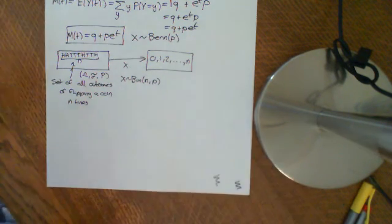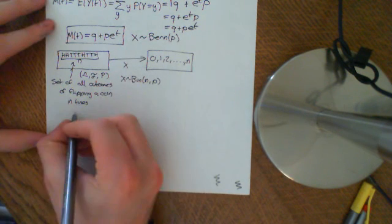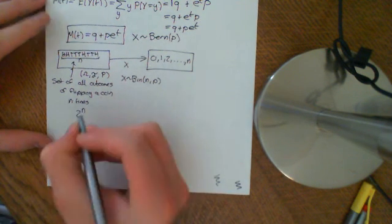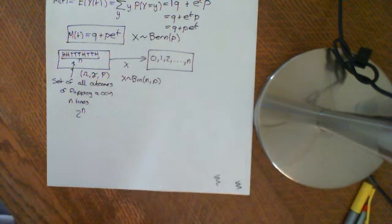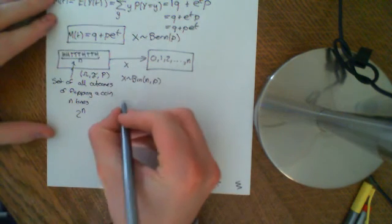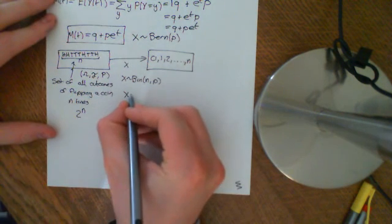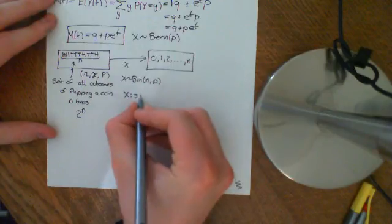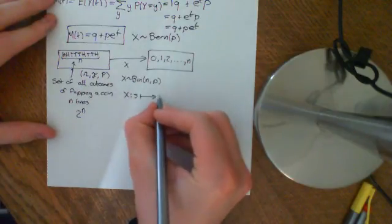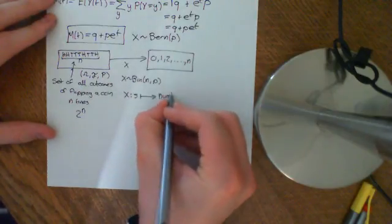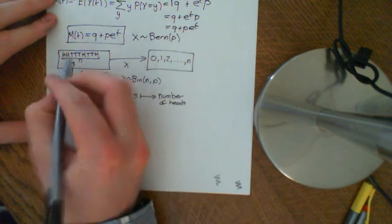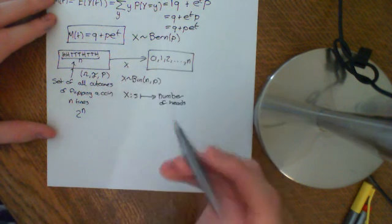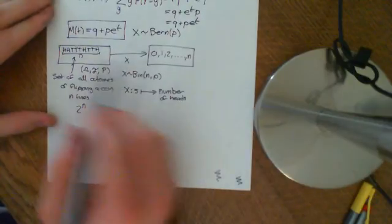Well, you could get a head or a tail on the first flip, then a head or a tail on the second, so all these possibilities mean there are 2^n total possible outcomes in this sample space. And we have the random variable X ascribing to each outcome s the number of heads that you get — so it's assigning to each outcome a real number which is just a count of the number of heads.